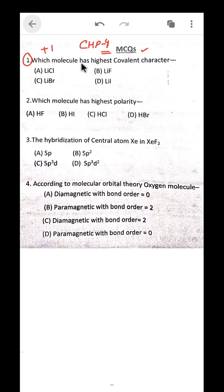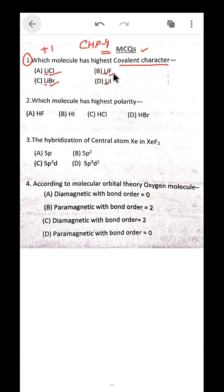The options are lithium chloride, lithium fluoride, lithium bromide, and lithium iodide. Here lithium is common, so we compare the different anions: Cl, Br, F, and I. To define covalent character in such molecules, we use Fajan's rule.